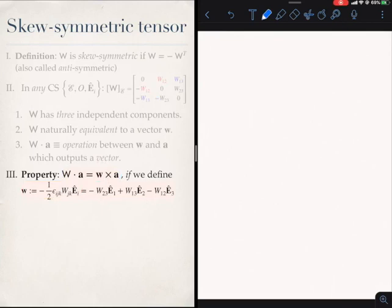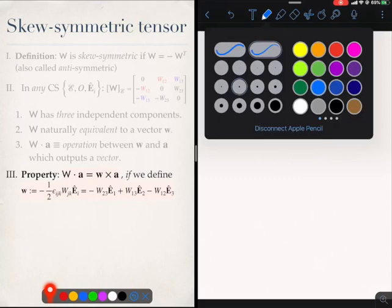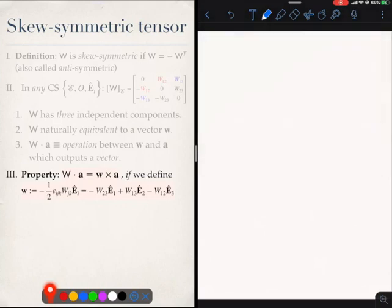So that's my claim. If you define small w by this, then the operation of the skew-symmetric tensor on any vector a will be the cross product of this small w with a, provided small w is equal to this complex kind of mapping. What I will do is I will prove this to you. So let's start the proof.